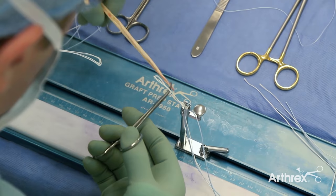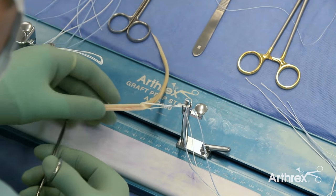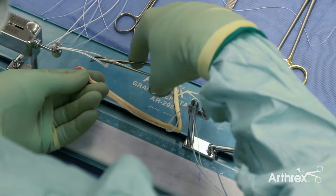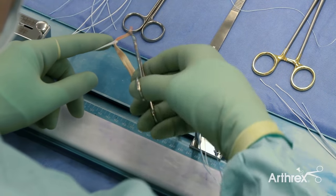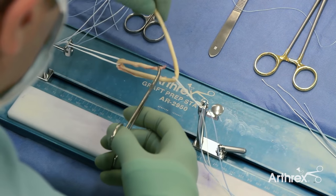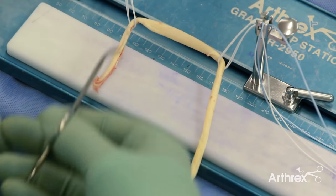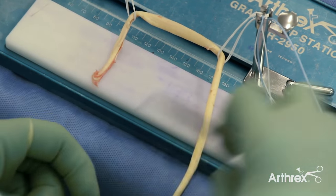First we take a small haemostat and bring the end of the semitendinosus graft through the first ACL tightrope and then through the second. This creates a short length and a long length.